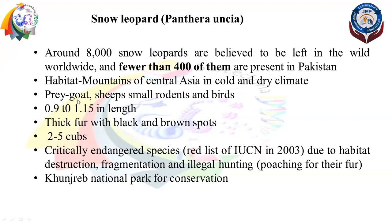The Snow Leopard preys on goats, sheep, rodents, and birds. Its length is 0.9 to 1.15 metres. It has thick fur with black and brown spots on a white background. At one time, it produces 2 to 5 cubs. It was declared a critically endangered species on the IUCN Red List in 2003.